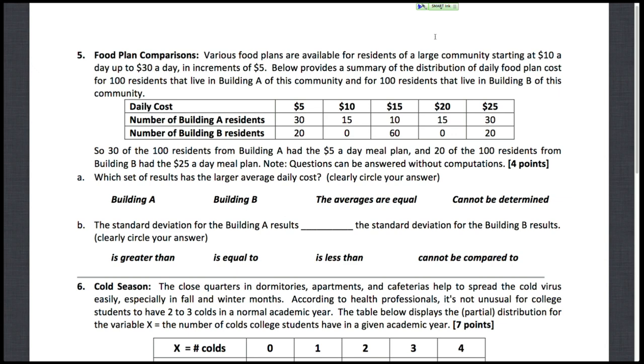We're looking at a summary of the distribution of daily food plan costs for 100 residents that are in Building A and another 100 residents that live in Building B. These are the various plans in terms of their cost. So 30 of the residents in Building A had a $5 a day meal plan, and then 20 out of the 100 residents that live in Building B selected the $25 a day meal plan.